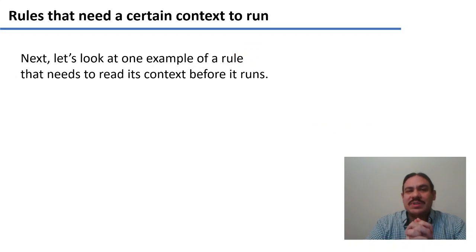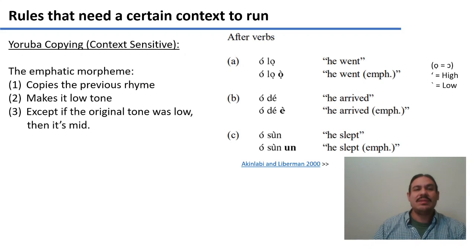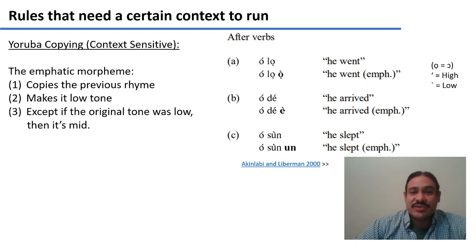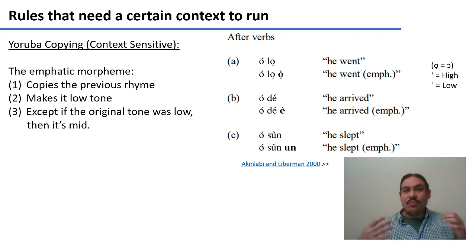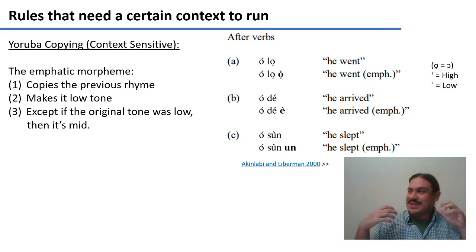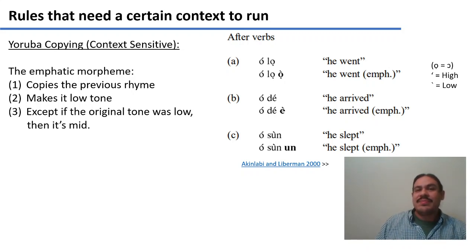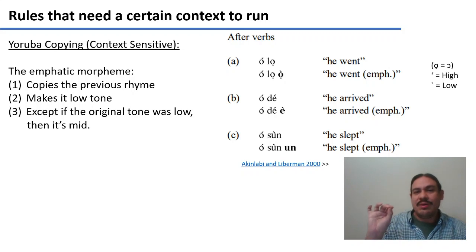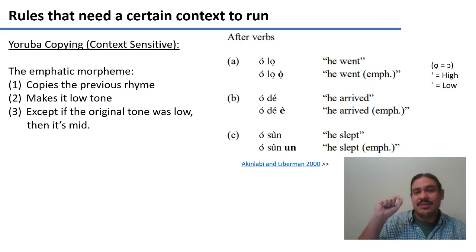Let's now look at an example of a rule that does need to read the context before it can apply. This is a rule from a language called Yoruba. Yoruba is spoken by about 45 million people, mostly in Nigeria. It has a morpheme called the emphatic, which means something like 'wow, he went' or 'oh my gosh, he went' — it adds emphasis. In example A, 'o-lo' means 'he went' and is the regular sentence with a high mid-tone. We have the word 'o' meaning 'he,' and 'lo' meaning 'went.'